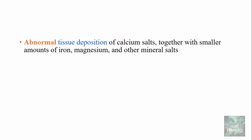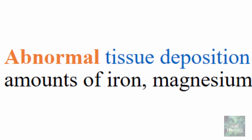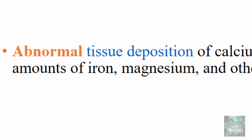So what is pathologic calcification? Pathologic calcification is defined as an abnormal tissue deposition of calcium salts together with smaller amounts of iron, magnesium, and other mineral salts. Note that the deposition is abnormal because normally you can expect calcification in the osteoid of the bone or in the enamel of the teeth.